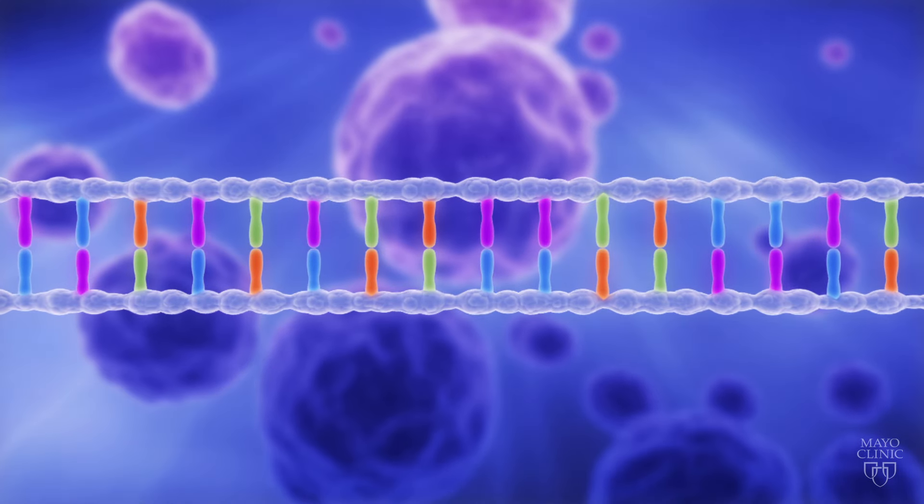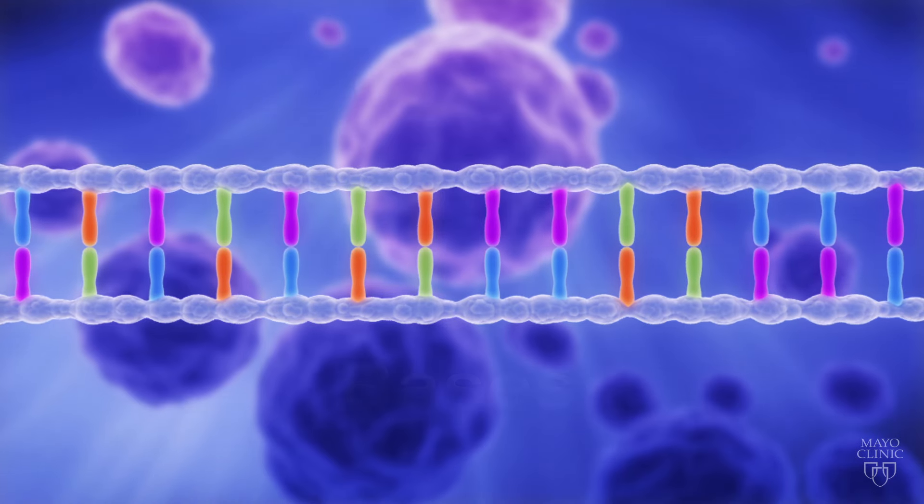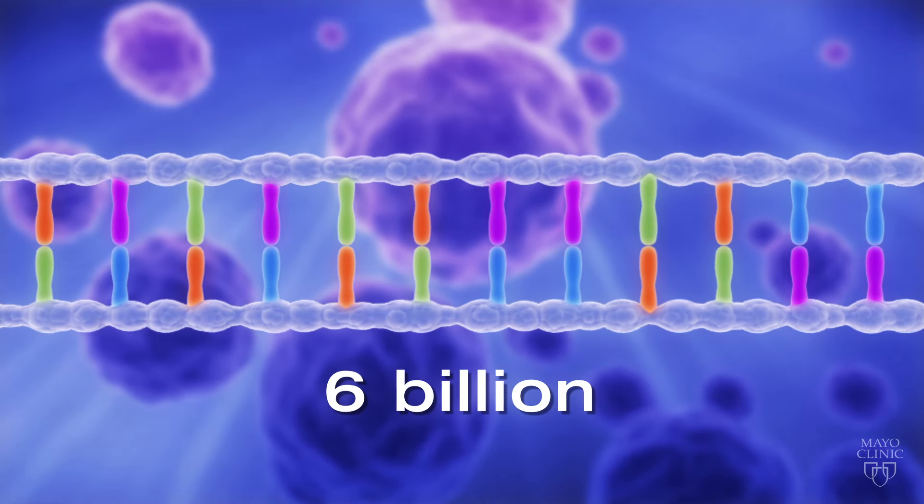The ladder is made up of paired chemical letters called bases. Altogether, our DNA contains about 6 billion such paired chemical bases.